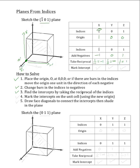The next step will be to mark these intercepts on the unit cell. For our x' intercept, we will start at our new origin and travel 1 unit in the negative x' direction, which will place our x' intercept right here. For our y' intercept, because it is infinity, we will just draw an arrow pointing to infinity to designate that the intercept is at infinity. And for our z' intercept, we will go back to our new origin and travel 1 unit in the positive z' direction, which will place our intercept right here.